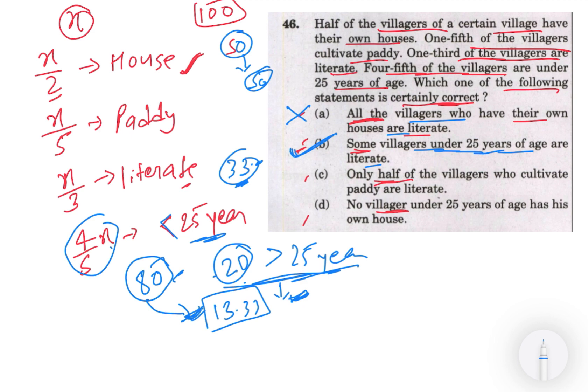Lekin do statement aur dikha deta hume ki yeh dono galat kaisa hoga. Only half of the villagers who cultivate paddy are literate. So paddy cultivate karte hai x by 5, x by 5 matlab hundred by five - 20 paddy cultivate karte hai. Aur half bola hai matlab 20 ka half 10 ho gaya, so keval 10 villagers literate hai. Toh hume yeh ratio pata nahi, yeh ratio literate se connected - aap directly connect nahi kar sakte.